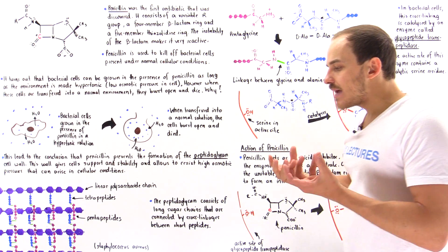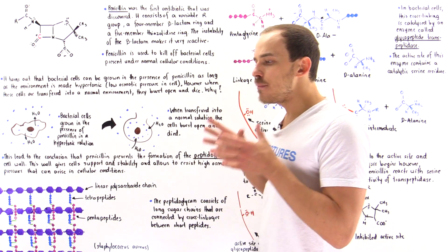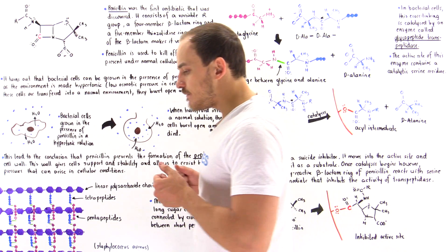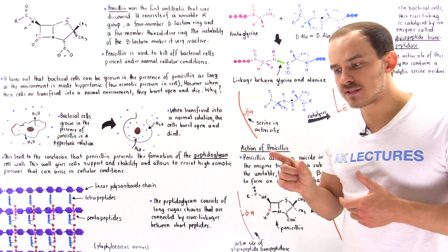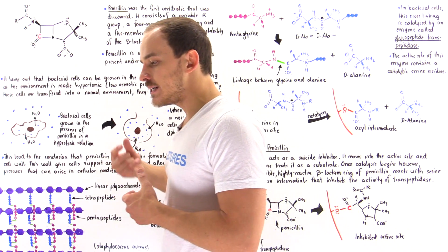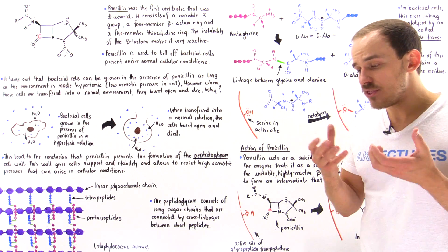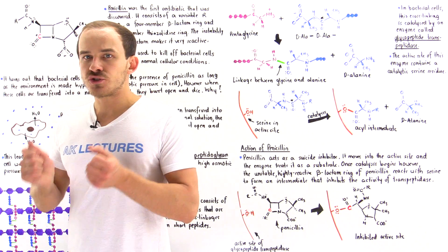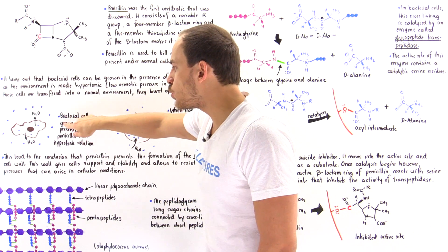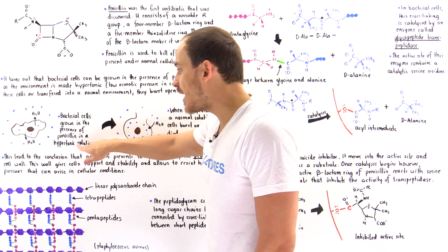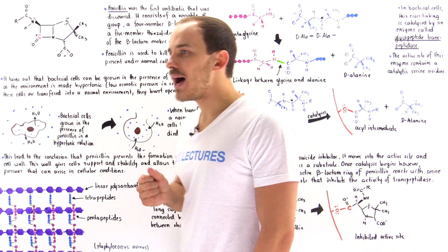How exactly did we discover the fact that penicillin actually acts indirectly on the peptidoglycan cell wall? In the late 1950s, scientists carried out the following experiment. They took bacterial cells, placed them into a hypertonic environment, and then added penicillin. What they found was that even though penicillin was present, those cells did not actually lyse — they did not actually die.